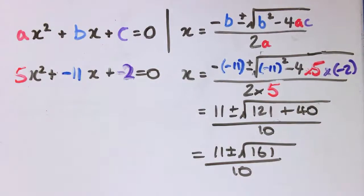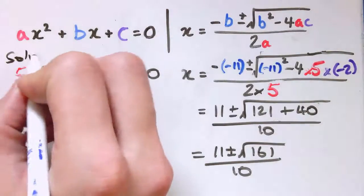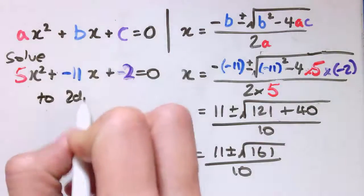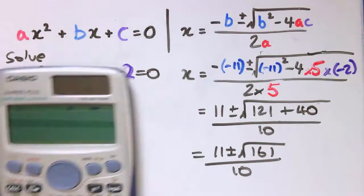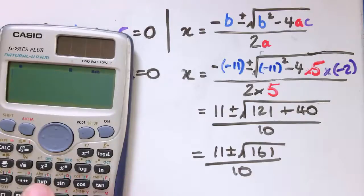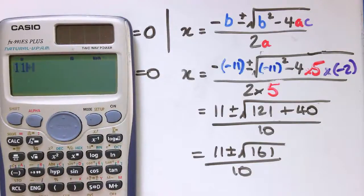Now I haven't got a nice number in the square root. So depending on what sort of exam you're doing, you might be asked to leave it in this form. It might say leave it as A plus or minus the square root of B over C or something. Or we might want it to two decimal places. So let's say the question says solve this, giving your answers to two decimal places. At this point, I would reach for the calculator.